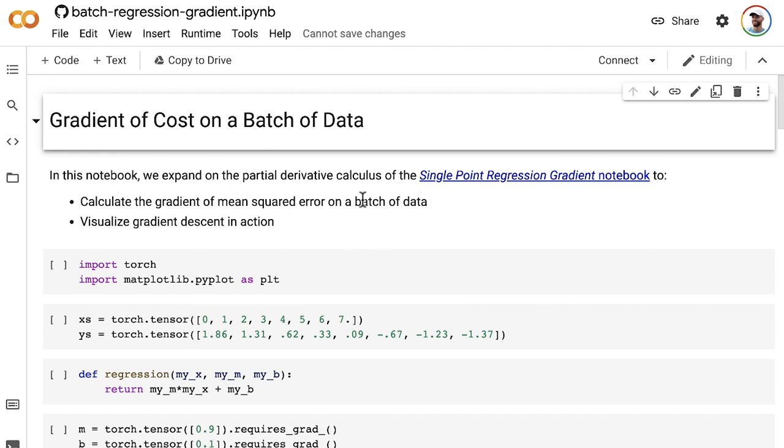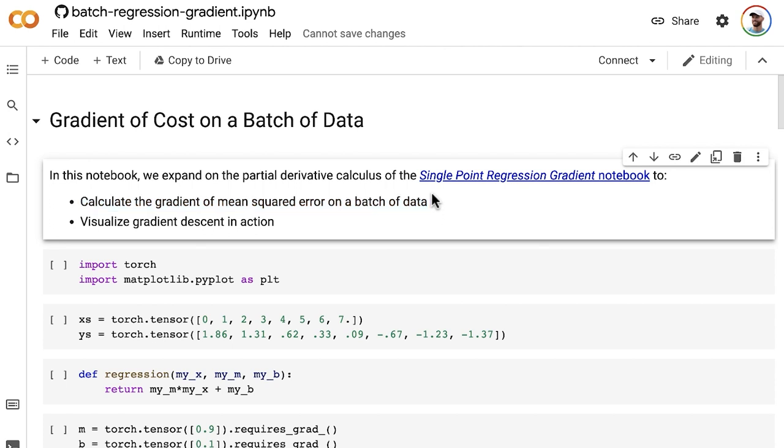In this notebook, we will expand on the partial derivative calculus of the single-point regression gradient notebook in order to calculate the gradient of mean squared error on a batch of training data. This is a much more realistic situation. We don't typically perform gradient descent on single data points. That's not making the best use of the compute and RAM resources that we have on a given machine. Typically, we grab batches of our data and perform gradient descent on that. We're going to need to do some new derivations. Previously, we had calculated the partial derivatives of quadratic cost with respect to our model parameters. Now we're going to calculate the gradient with respect to mean squared error. Also, in this notebook, after we do that, we'll be able to visualize gradient descent in action. That'll be pretty cool.